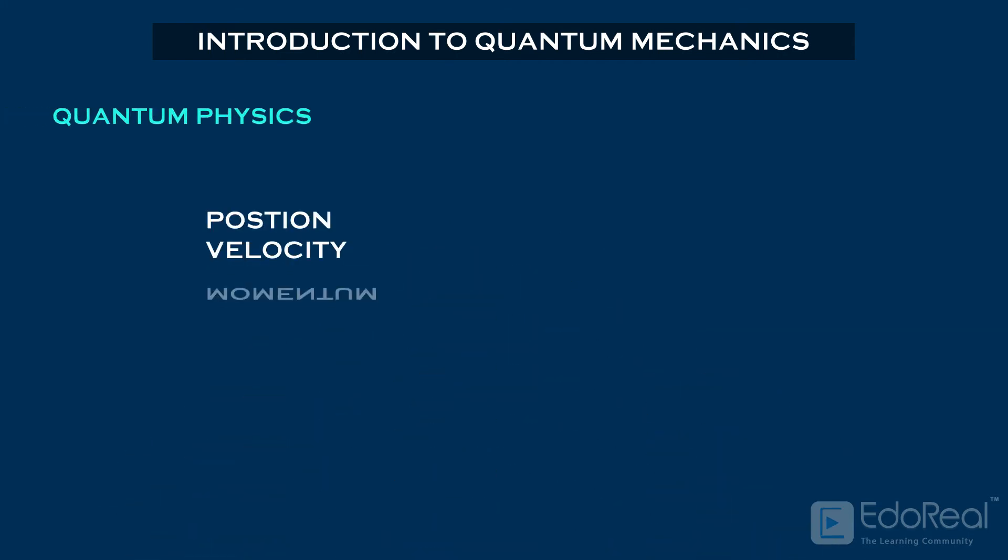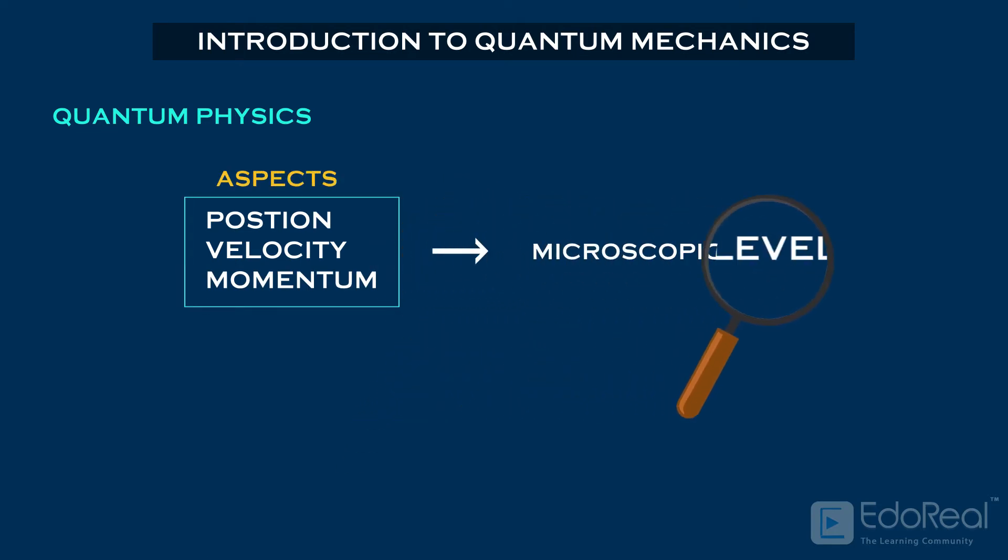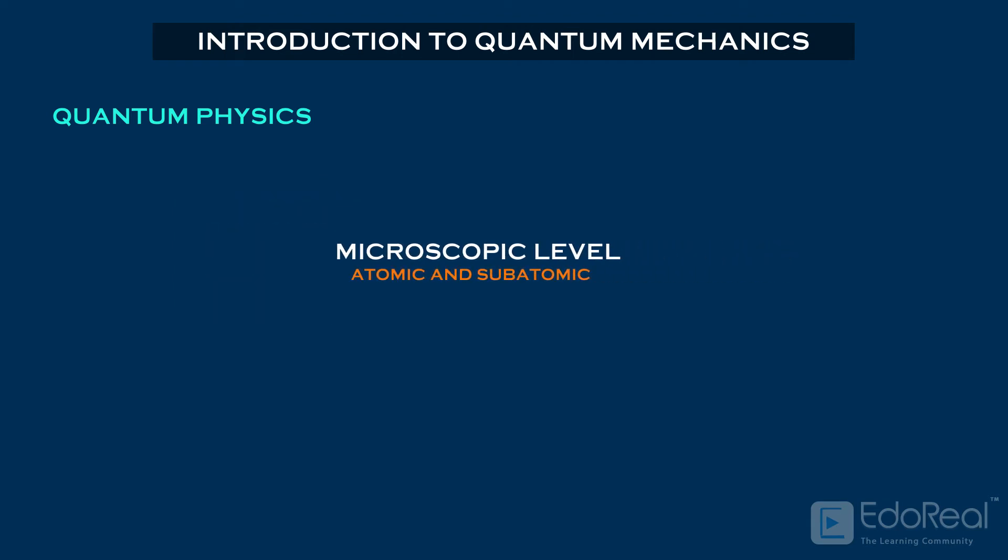Whereas quantum physics explains the aspects of nature at a microscopic level, that is, atomic and subatomic levels. Classical physics fails to explain the physical phenomenon of atomic particles such as electrons, protons, neutrons, photons, etc.